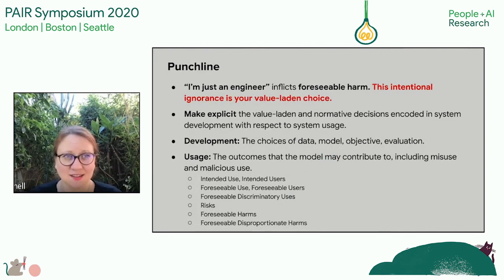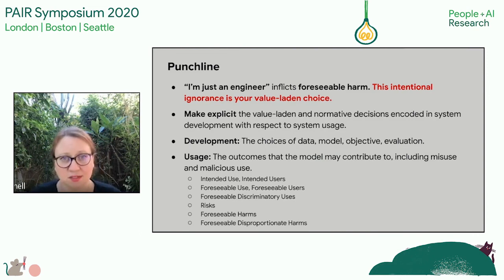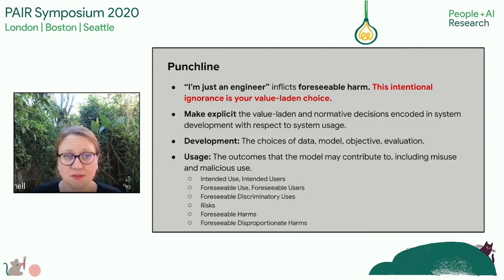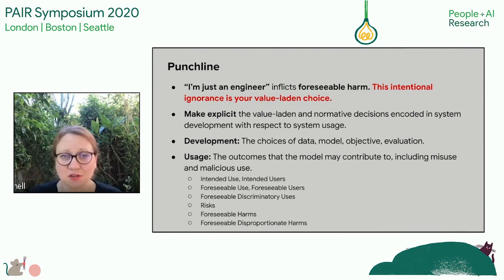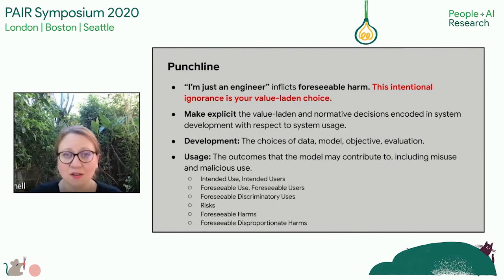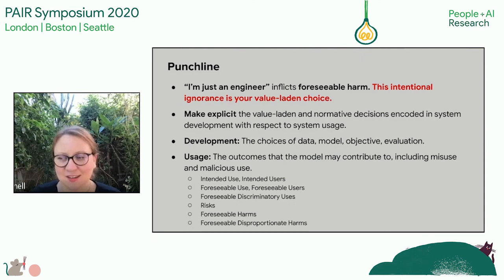So the punchline here is that the 'I'm just an engineer' approach inflicts foreseeable harm. This intentional ignorance is your value-laden choice. The goal in ethical model development is to make explicit value-laden and normative decisions encoded in development with respect to the system's usage in context. Development considerations include the choices of data, the model, the objective, and how to evaluate. And for usage, the considerations include the outcomes that the model may contribute to, including misuse and malicious use, with all kinds of considerations such as foreseeable harms, foreseeable discriminatory uses, and all the reasonable side effects or direct effects of different model decisions.